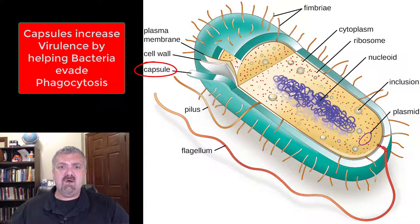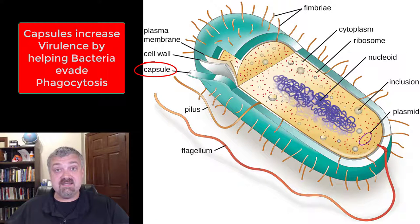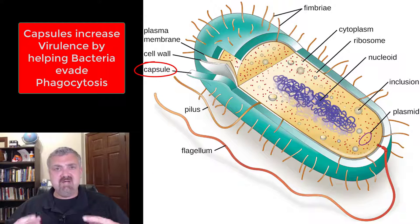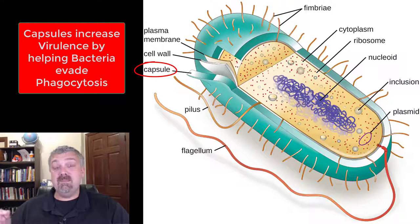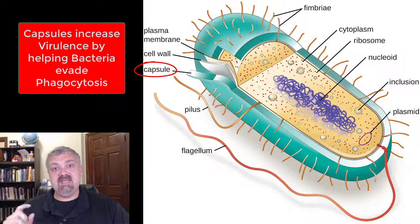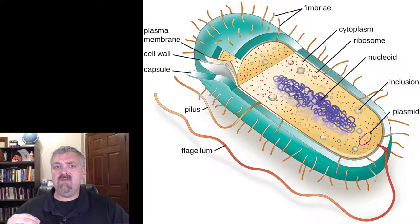Next we have the capsule. Not all bacteria have capsules, but they definitely make bacteria more dangerous — they increase virulence, which is the term for how pathogenic or dangerous an organism is. The capsule is a polymer substance, usually made of carbohydrates and/or proteins, that coats the outside of the cell. It makes organisms more dangerous because it helps them evade phagocytosis — many immune cells can engulf and destroy bacteria, but have a very hard time doing that with a bacteria that has a capsule.